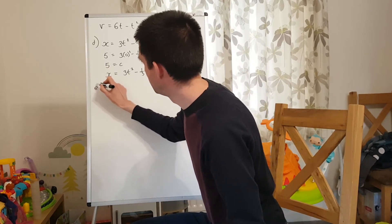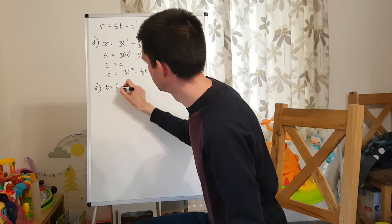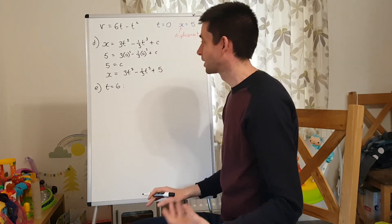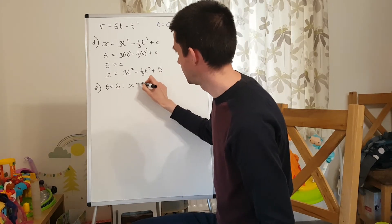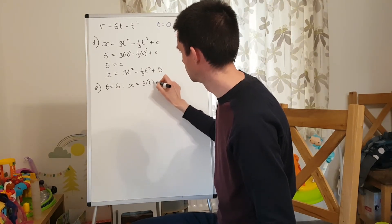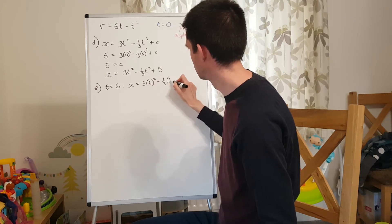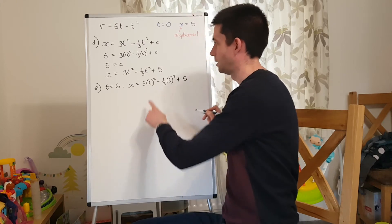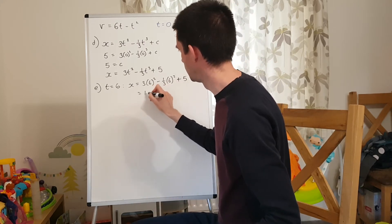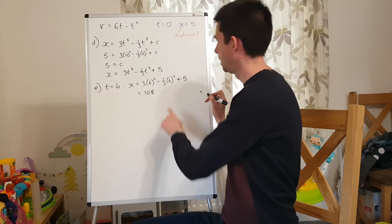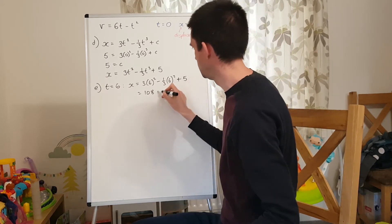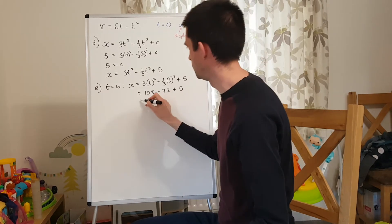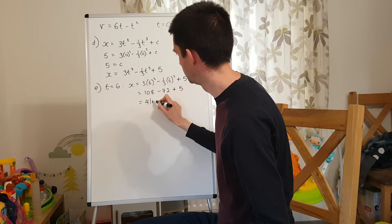Part E is asking me when t equals 6, what is the position from the fixed origin O? If I substitute t equals 6 into here, 3 lots of 6 squared, that's 108. 1 third of 6 cubed, 72. Plus 5, which is 41 metres.